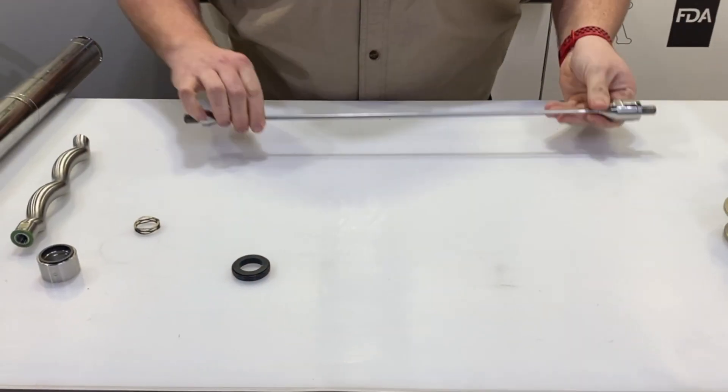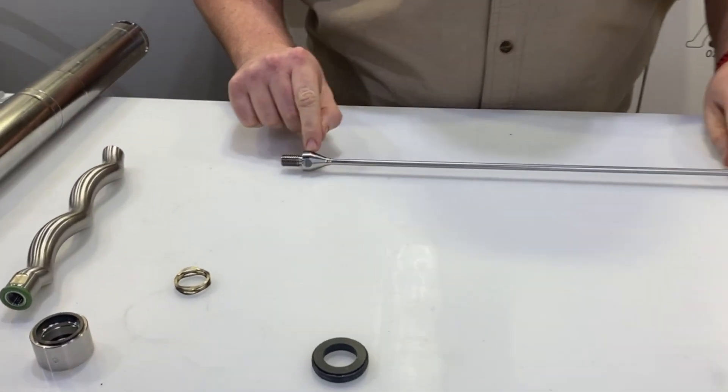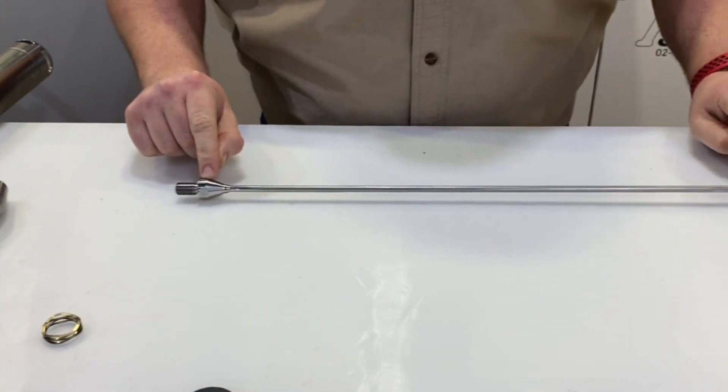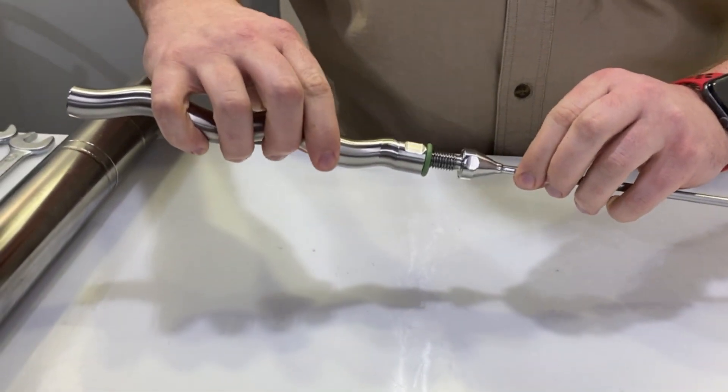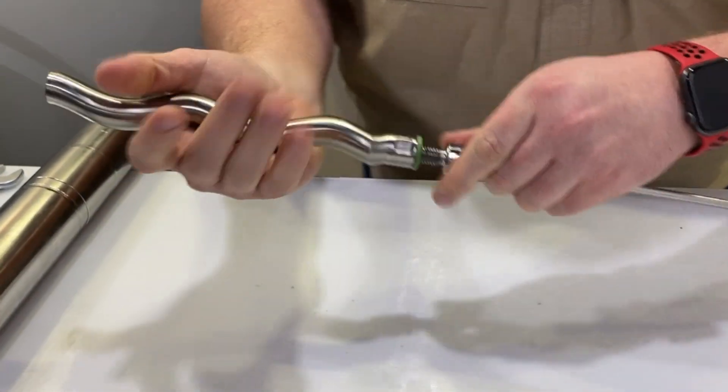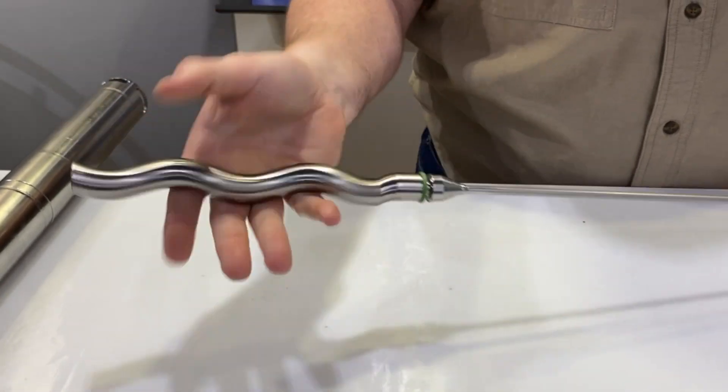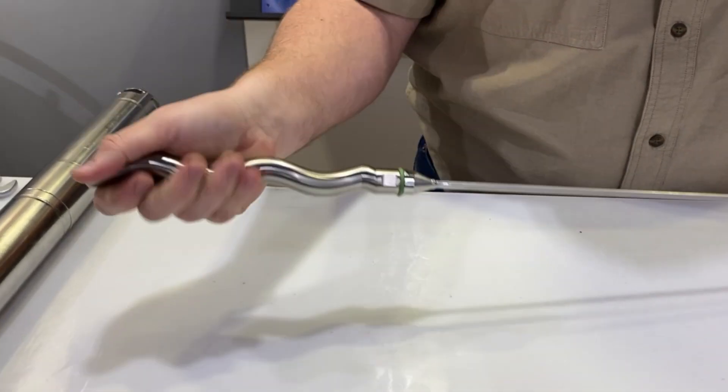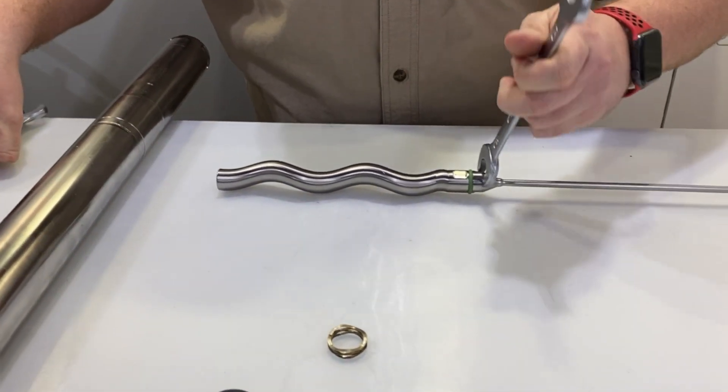Now we can put our rotor back onto the bottom side of the shaft, which is the smaller of the two. That will just simply thread right back on. Then snug that up with your 18mm wrenches.